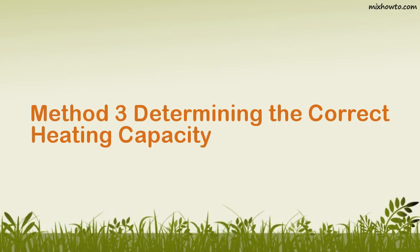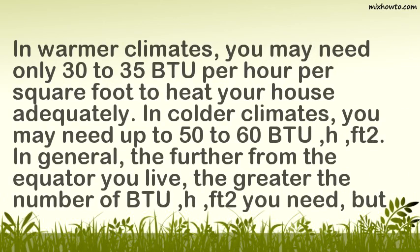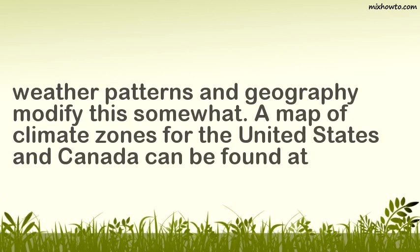Method 3: Determining the Correct Heating Capacity. Consider your climate. In warmer climates, you may need only 30 to 35 BTUs per hour per square foot to heat your house adequately. In colder climates, you may need up to 50 to 60 BTU/H/ft². In general, the further from the equator you live, the greater the number of BTU/H/ft² you need, but weather patterns and geography modify this somewhat. A map of climate zones for the United States and Canada can be found online.